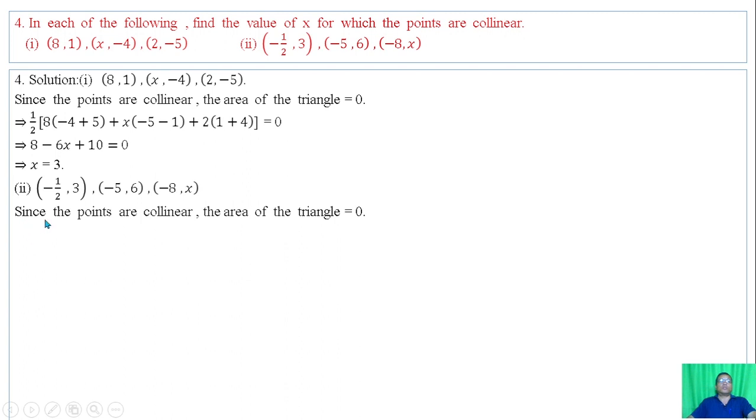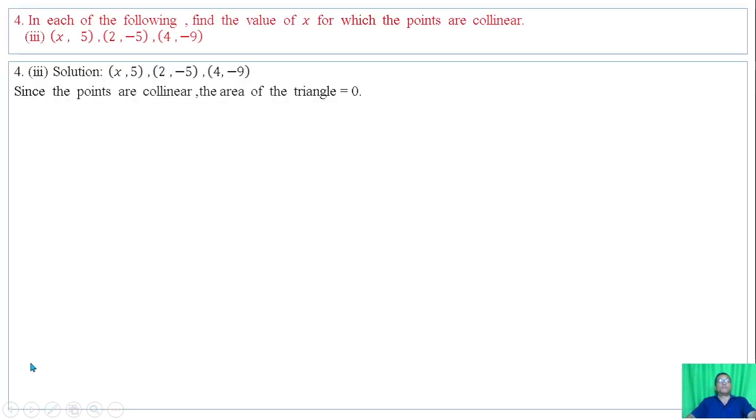Question 4: Find value of x for which the points are collinear. Since the points are collinear, the area of the triangle must be zero. For part 2, since the points are collinear, the area of the triangle must be zero. Applying the formula with x1, y1, x2, y2, x3, y3, we have the equation. For part 3, using the formula we get x equals minus 3.